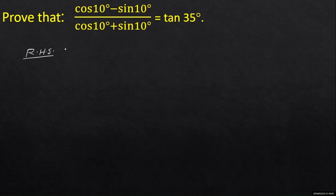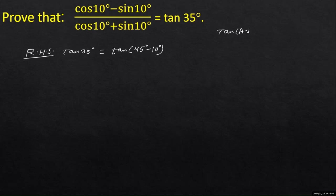RHS is tan(1035°), and 1035° is equal to tan(45° minus 10°). Here we will apply the formula of tan(a minus b). Formula of tan(a minus b) is equal to tan(a) minus tan(b) upon 1 plus tan(a) into tan(b).